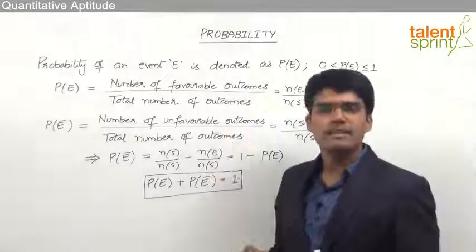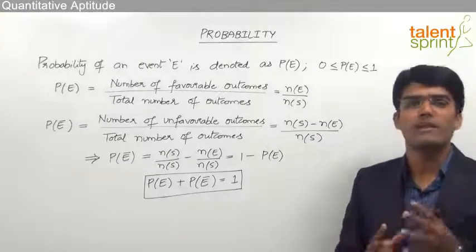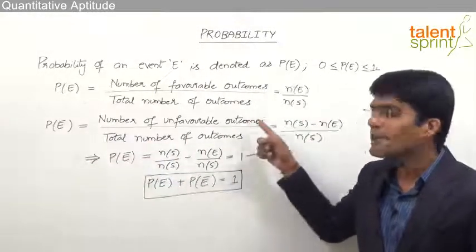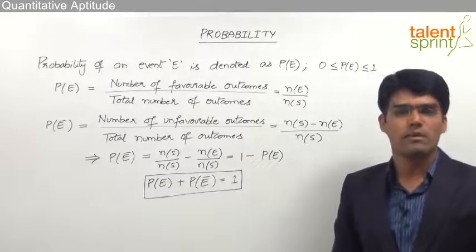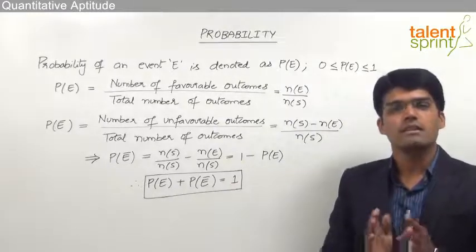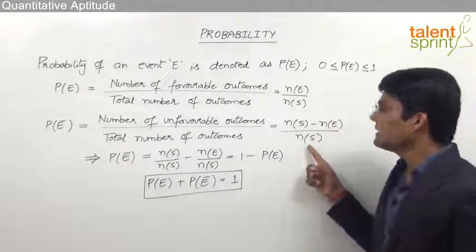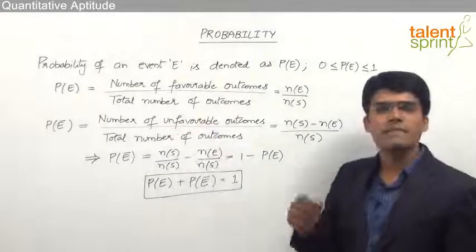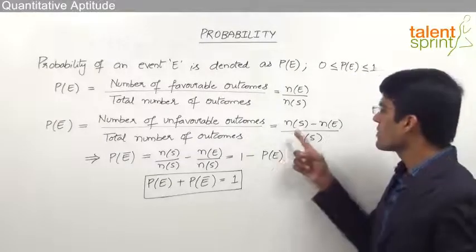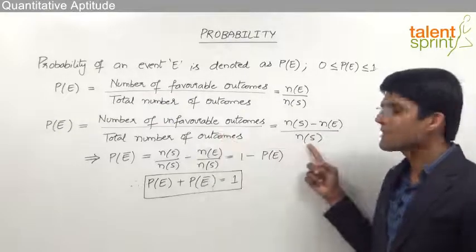P(E) is the probability of success of a particular event. The probability of failure is denoted as P(E') or P(E bar), which equals the number of unfavorable outcomes divided by the total number of outcomes. That can be taken as N(S) minus N(E), all divided by N(S). So the number of unfavorable outcomes equals total number of outcomes minus the number of favorable outcomes.